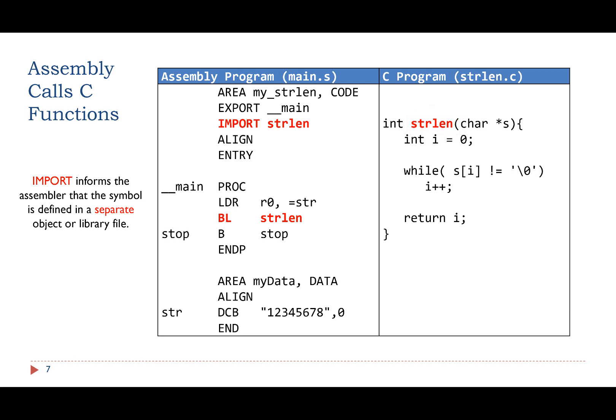The assembly code must use import to inform the assembler that the symbol strlen cannot be resolved in the current assembly file. This symbol is defined in a separate file. In addition, the assembly program must follow the procedure call standard to pass arguments to the C function and receive the result from the C function.